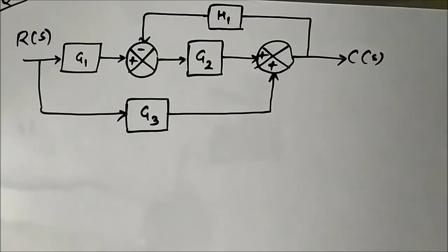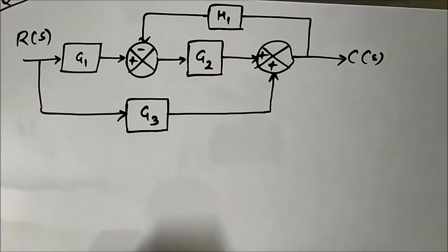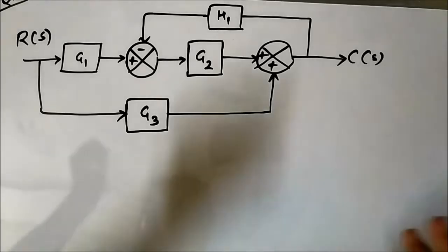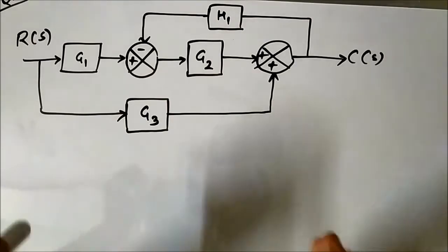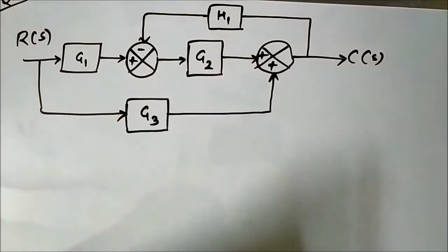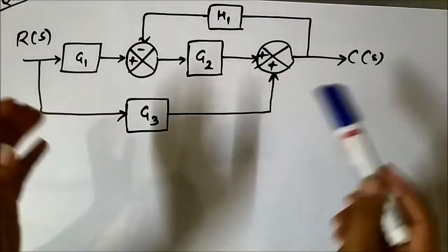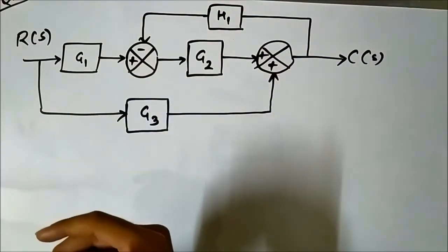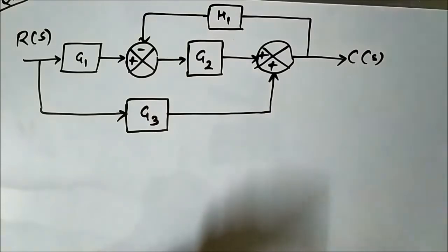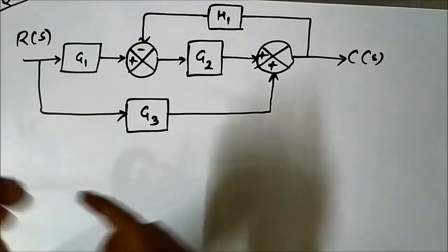Hello friends, welcome to Engineering Tutorial. Here we are going to discuss another question on block diagram reduction and we'll try to apply the block diagram reduction rules to simplify this block diagram. We have to find out the transfer function of the overall system, C(s) by R(s).